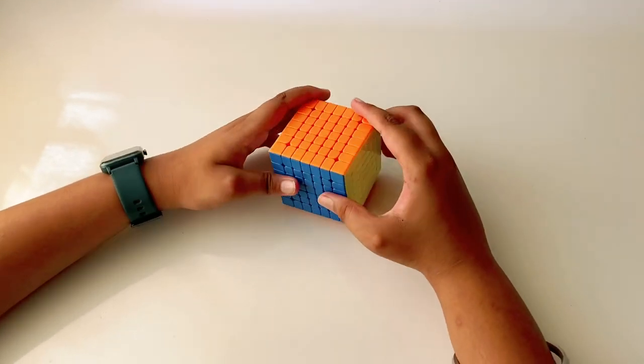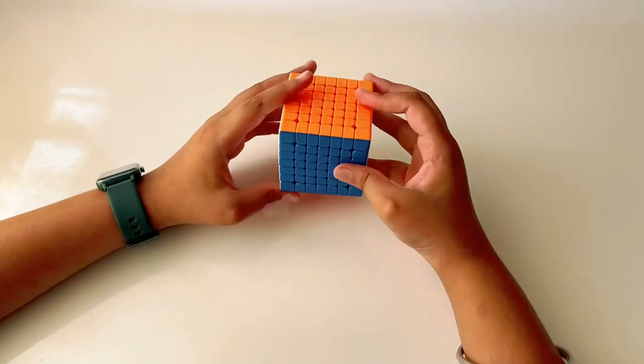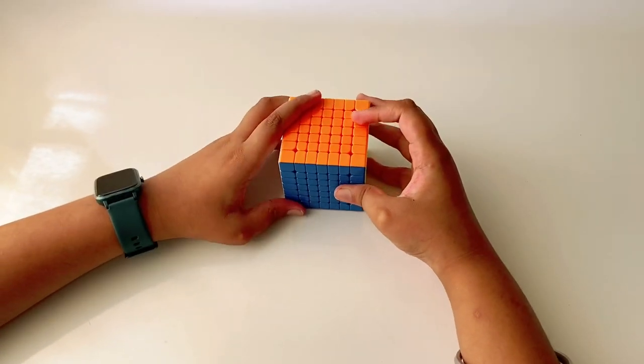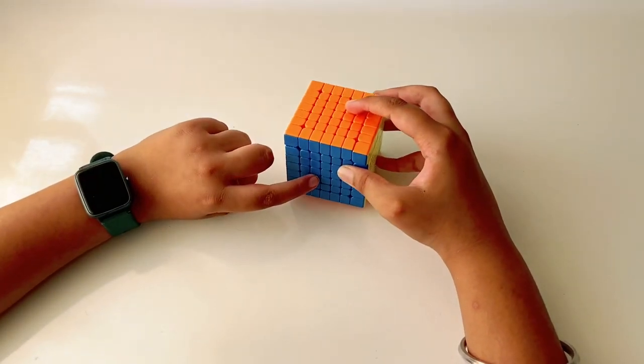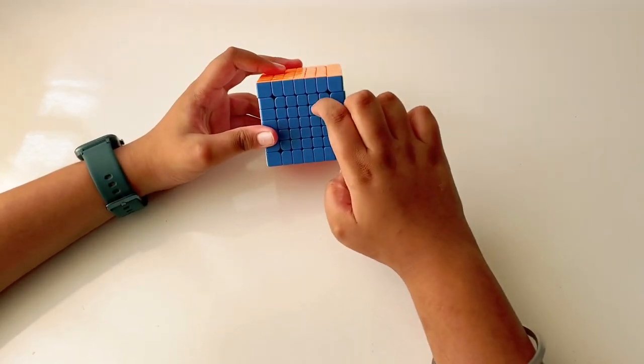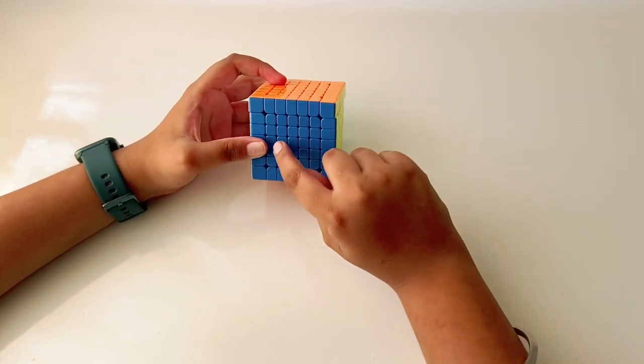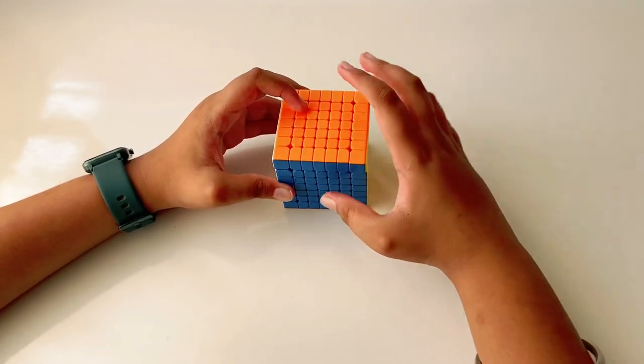For solving this case, this is called the commutators. For this, you have basically one piece over here and another piece over here, and we have to switch it in these centers. It can be anywhere, even here, here, here, anywhere on this.